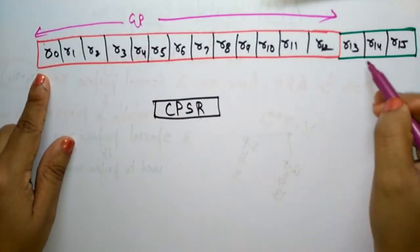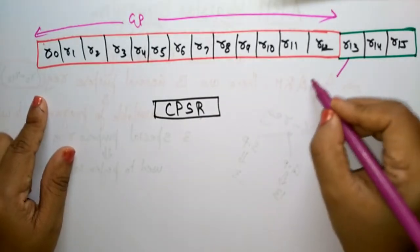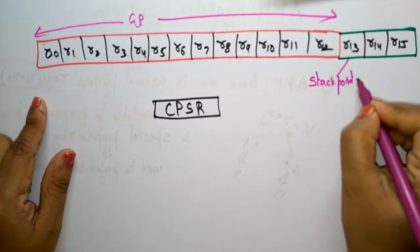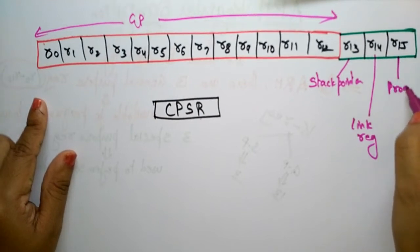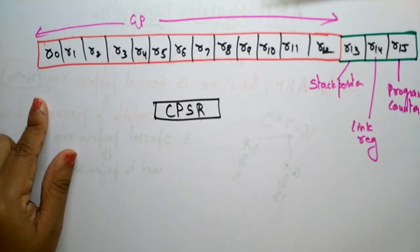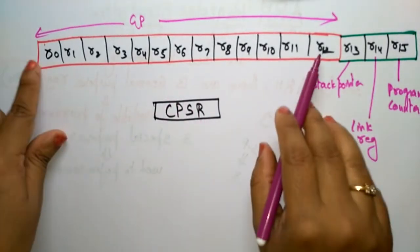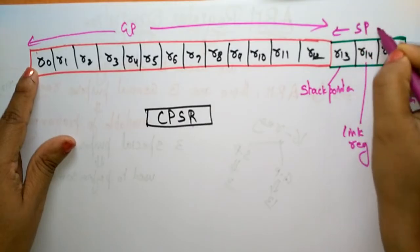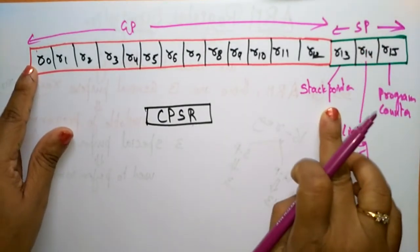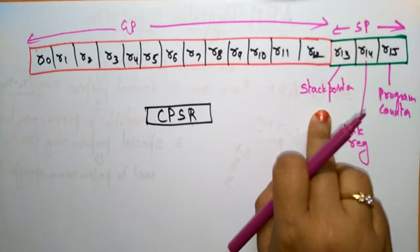From R0 to R12 are the general purpose registers that programmers can use. R13, R14, and R15 are the special purpose registers — also called special function registers. R13 is the stack pointer, which holds the address of the top of the stack. These are all temporary registers, but R13 specifically holds the address of the top of the stack.